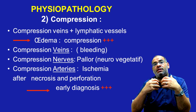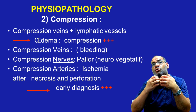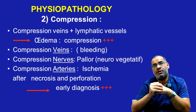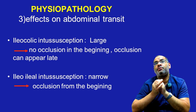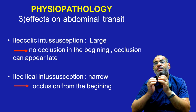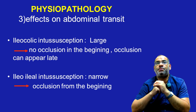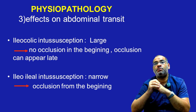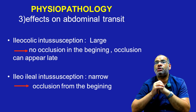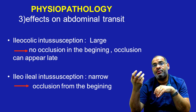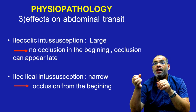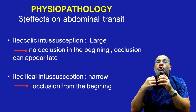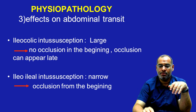This explains the necessity of early diagnosis to avoid all these complications. We will also have effects on the abdominal transit depending on the type of intussusception. In the ileocolic form, there is a large opening and no occlusion at the beginning — occlusion can appear late. In the ileo-ileal form, there is a narrow opening and occlusion can occur from the beginning.